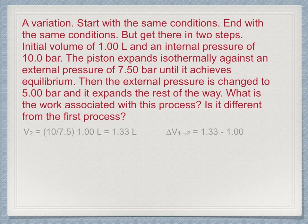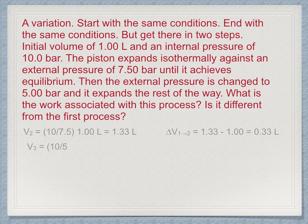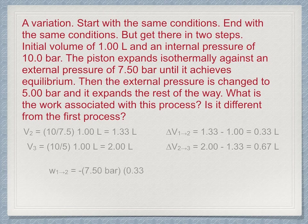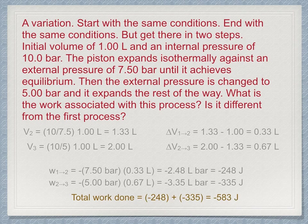The first step stops at 1.33 liters of volume, so the volume changes by 0.33 liters. The second step goes to the same end point as before. The volume change for this step is 0.67 liters. Work calculations give us minus 248 joules for the first step and minus 335 joules for the second step. Overall, the work done by the system is minus 583 joules. Recall that minus 500 joules of work was done in the one-step process. Here we have two processes that start and end at the same place, but do not have the same work done when traversing the two paths.